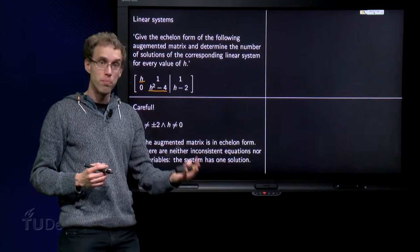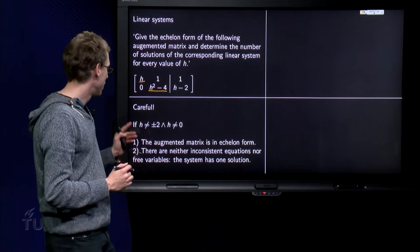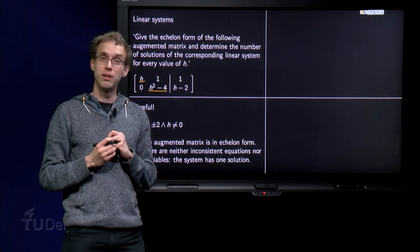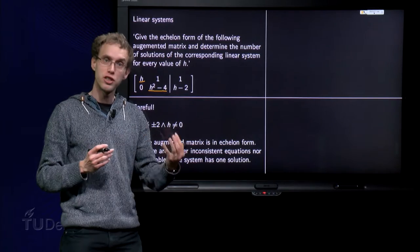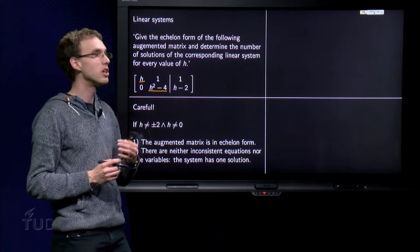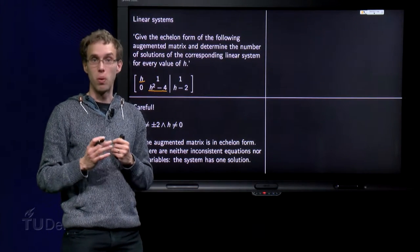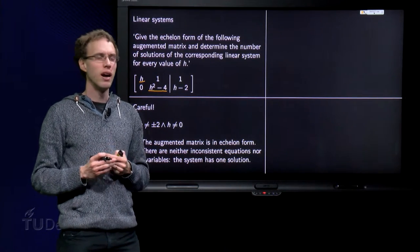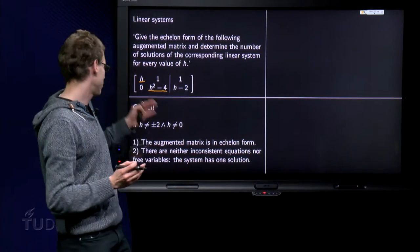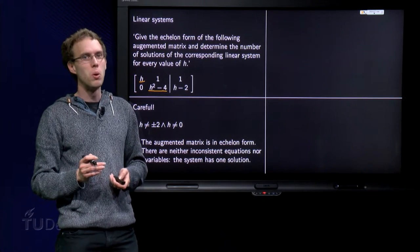We have a pivot in every column, so we will not have free variables. So that means that the linear system is neither inconsistent nor has an infinite number of solutions, so in that case the corresponding linear system has one solution. I assume you think, yeah, of course, I have a pivot everywhere, the system always has one solution.